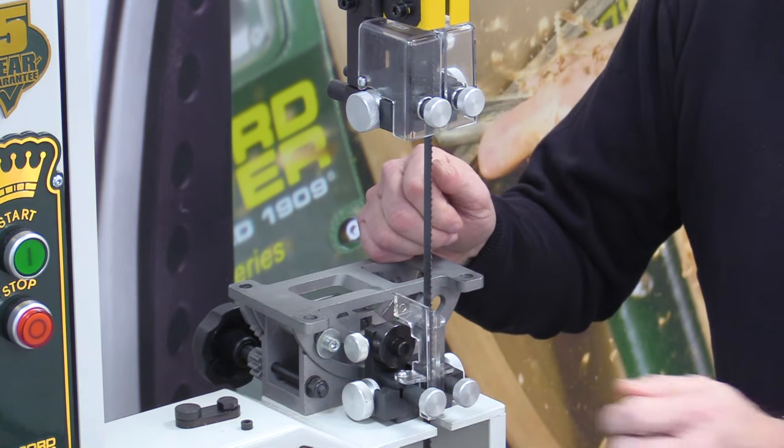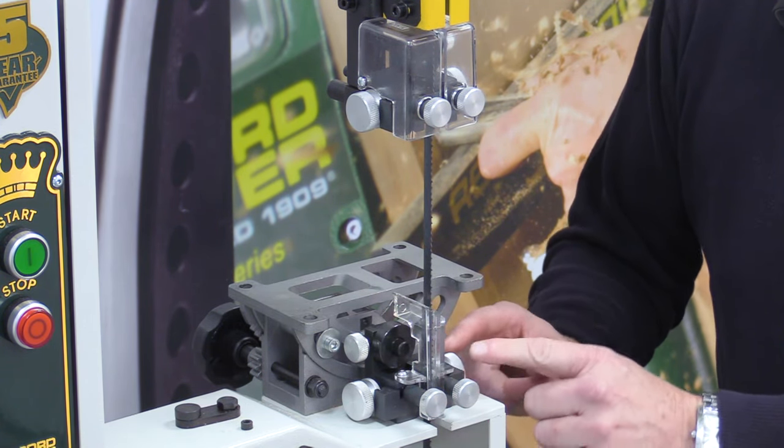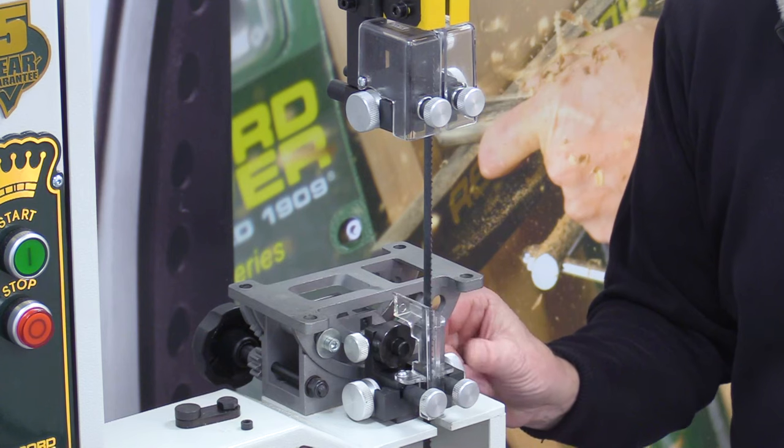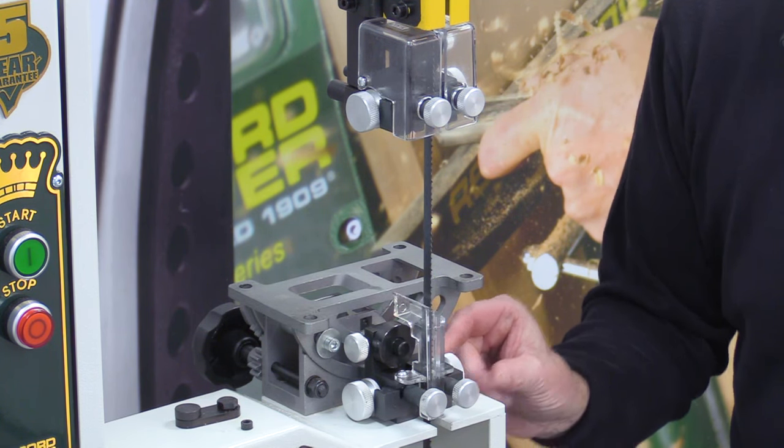When you've done that the locking screws at the front loosen off and then again we can turn, these are all knurled so they're easy to grip and these will take your block in and out as close to the blade as you possibly can.